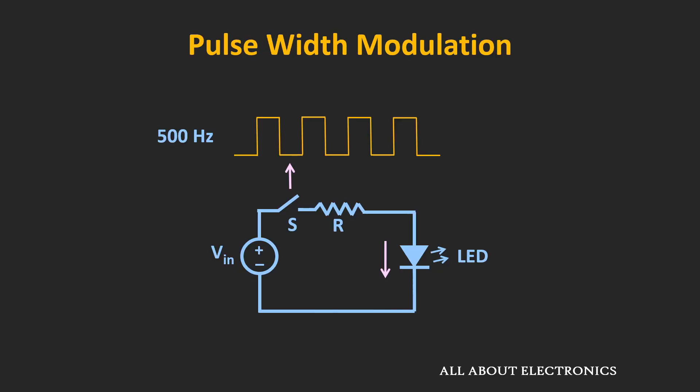In pulse width modulation, usually a MOSFET is used as an electronic switch. The advantage of this MOSFET switch is that during switching, the power dissipated across the switch is negligible. So we can say that this pulse width modulation technique is a very efficient technique, and that is why nowadays it is preferred over conventional techniques.